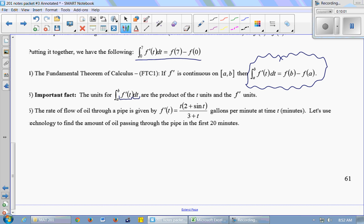Let's look at another example. The rate of flow of oil through a pipe. So this is telling us how fast the oil is flowing through the pipe, not how much, but how fast. It's given by f'(t) = t(2 + sin(t))/(3 + t) gallons per minute. So you plug in a time, and it tells you how fast in gallons per minute. So we're going to use our graphing calculator to find the amount of oil that has passed through the pipe in the first 20 minutes.